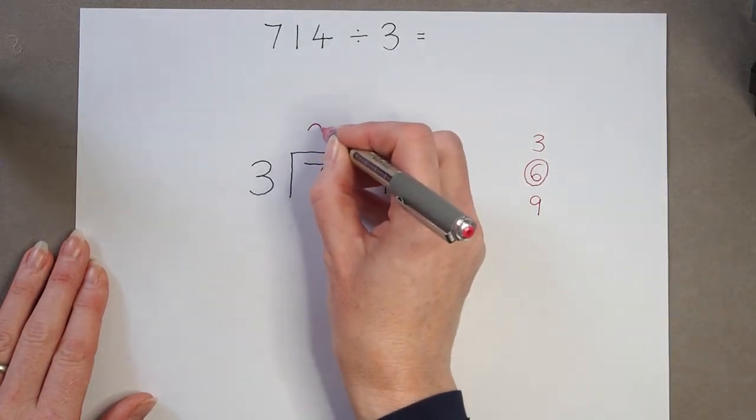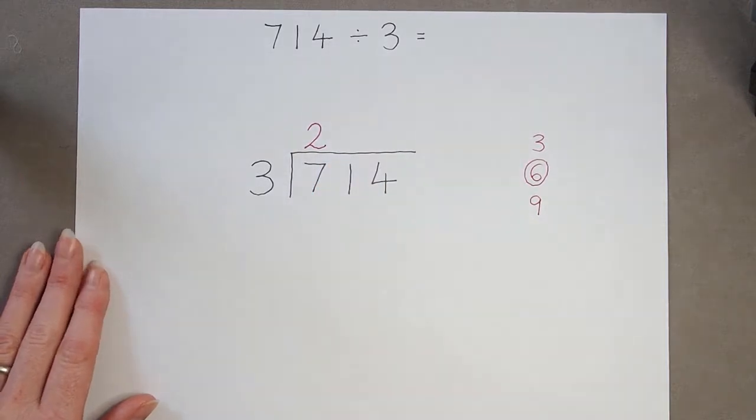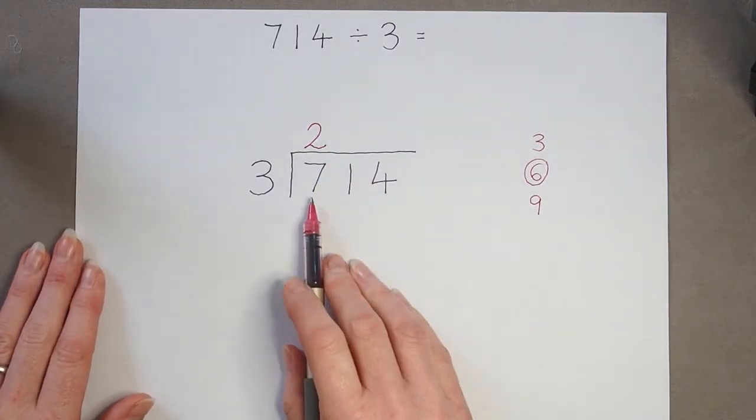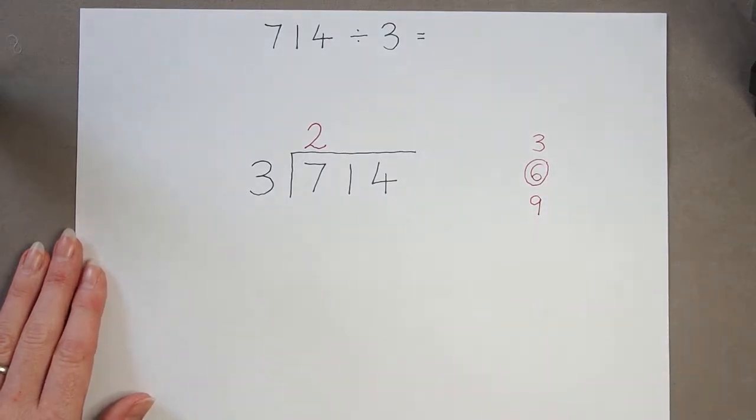So 7 divided by 3 is 2, but I haven't used up all those 7. I only used up 6, so that tells me I've got 1 left over, what we call a remainder.